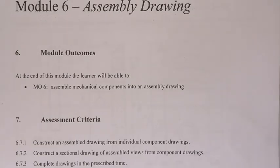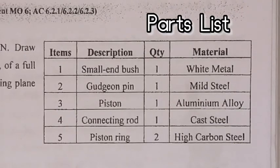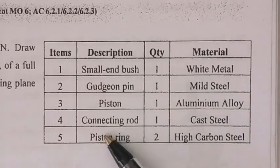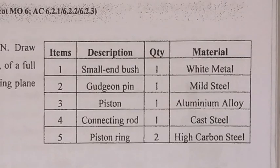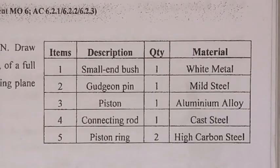In order to do this, we'll be looking at the parts list. In a parts list, you have four different types of descriptions: you have items, you have description, quantity and materials. The items is numbered — dependent on the number of items, it's numbered. Then you have the names of the items, which is the description of the items. Then the quantity — how many of the item is there in the assembly. In this case, there's two piston rings. Then the type of material it has been manufactured from. These materials are specifically used in the design of the assembly.